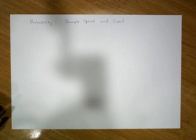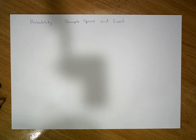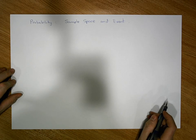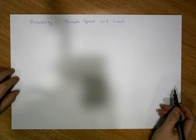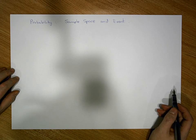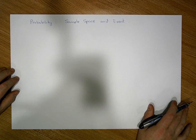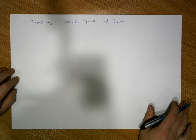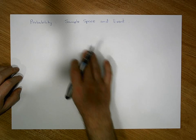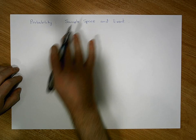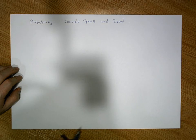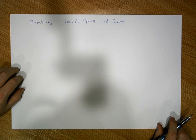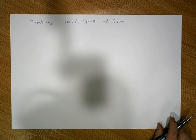Hi guys, this is Jonathan Lambert of the Mathematics Development and Support Centre at the National College of Ireland. This short video is going to be an introduction to probability theory — a very foundational introduction — and more importantly, it's going to concentrate on two important things: the sample space associated with an experiment, and what we mean by an event, or the likelihood of an event happening.